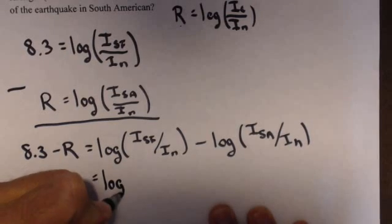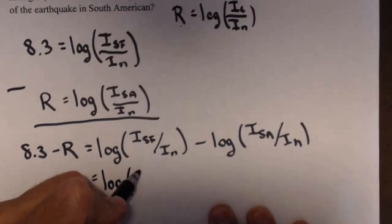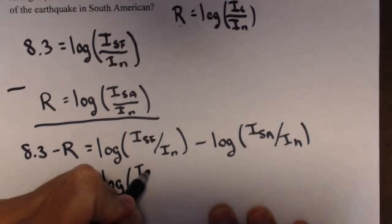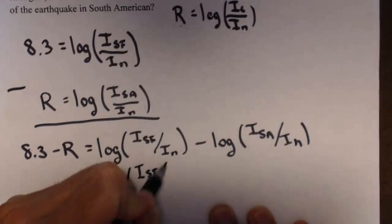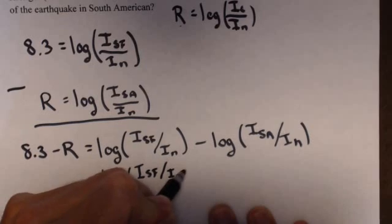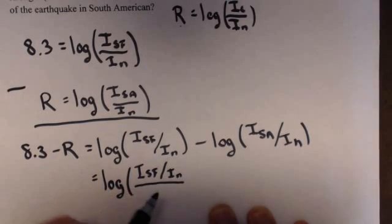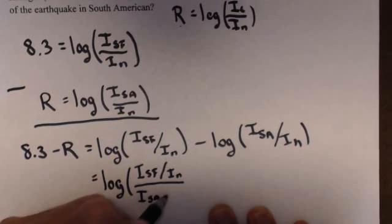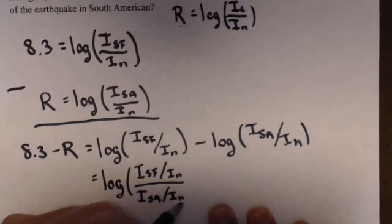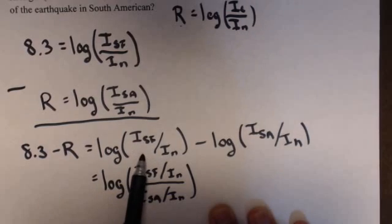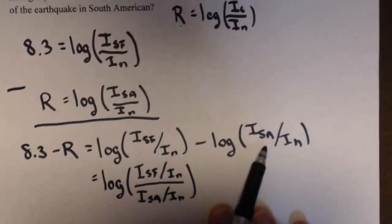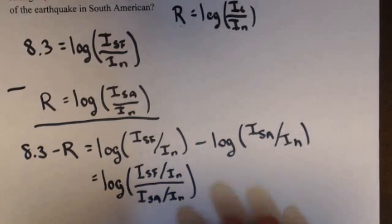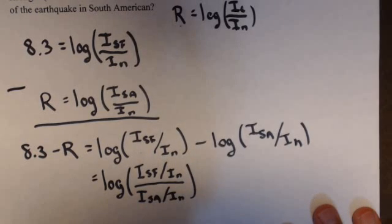So, we have log of I_SF over I_n over I_SA over I_n. So log of this over this. That's one of our main properties of log, very important one.